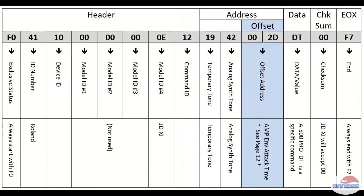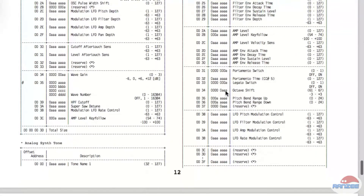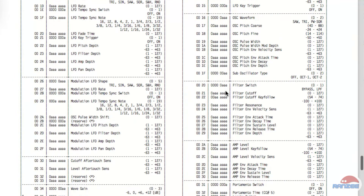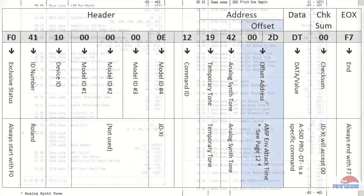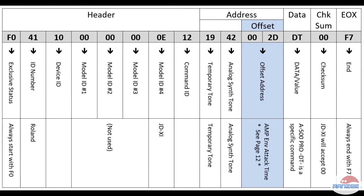Now let's get to the offset part — this is really where the meat and potatoes is. This is the bit that identifies the actual area of the synth parameter you want to change. Our offset is 002d. Why don't we go find what 002d is? As noted below, it's the amp envelope attack time — see page 12. Let's go to page 12. There it is: 002d — amp envelope attack time. And on the right hand side we see 0 to 127, which are the allowed values we can supply.